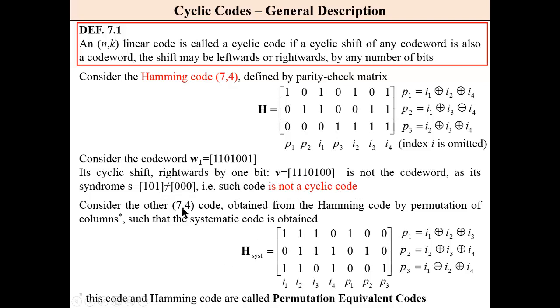Consider the other (7,4) code obtained from the Hamming code by permutation of columns, such that the systematic code is obtained, which means that information bits are at the left and parity check bits are at the right.